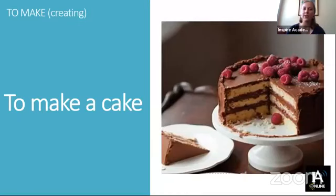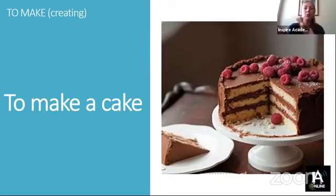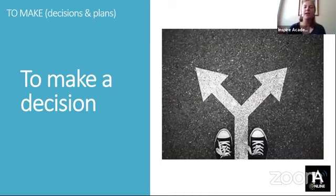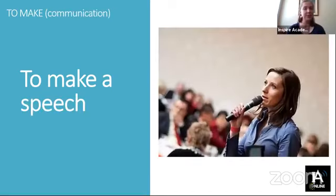Let's look at a few examples. For creating, we can make a cake. Food and drink always come under this creating category — we always talk about making food. Then for decisions, we make a decision, we make a plan. We cannot do these things; we must make them in English. And finally, for communication: we make a speech — the president makes a speech — and you make a complaint as well. This communication between people.